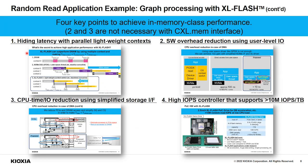There are four key points to achieve in-memory class performance in graph processing. The first is hiding the long latency of XLFlash with lightweight context switching. The second is software overhead reduction in IO operations. The third is using a simpler interface. The last is using a high-IOPS controller with more than 10 mega IOPS per TB. We can omit points two and three with the CXL memory interface, because it is already simple enough.